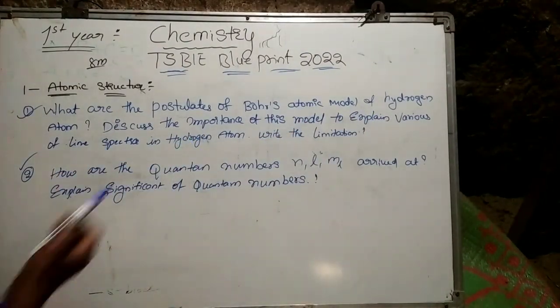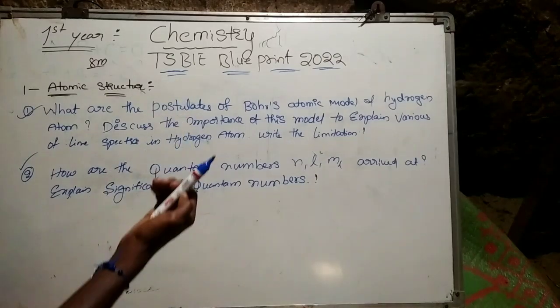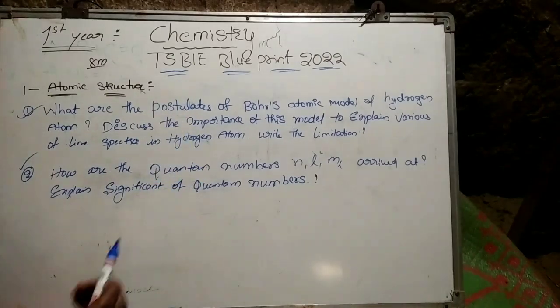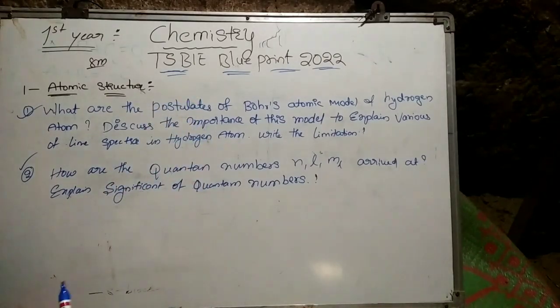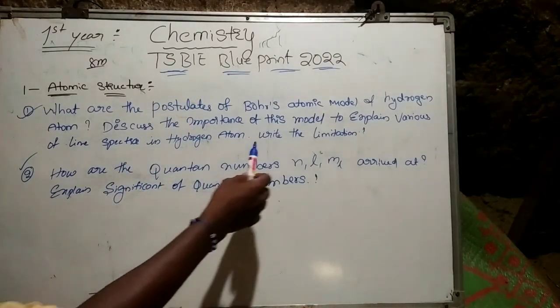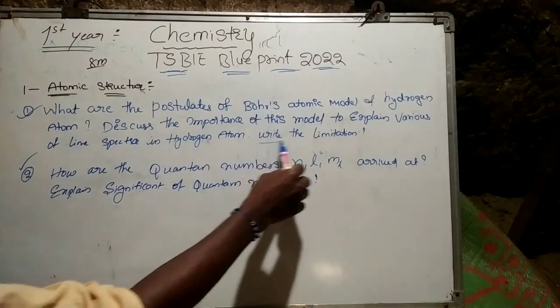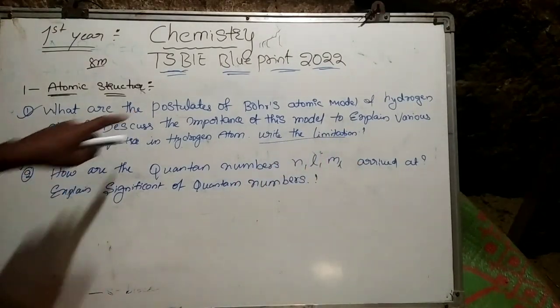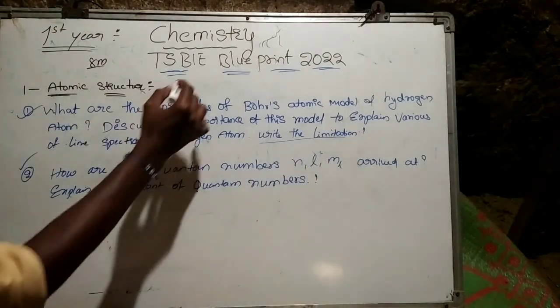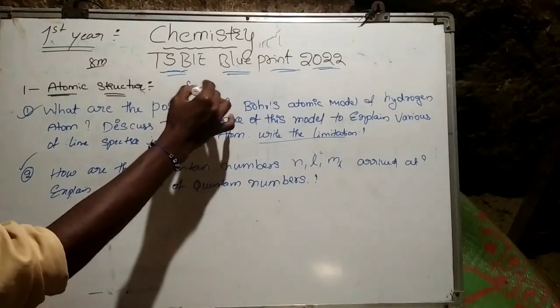In hydrogen atom, we have different line spectra. We need to explain the line spectra and discuss the importance of Bohr's atomic model along with its limitations. This is for 8 marks.